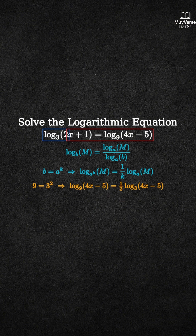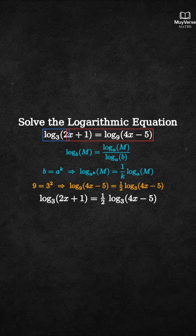Now our equation becomes: log base 3 of (2x plus 1) equals one half times log base 3 of (4x minus 5).